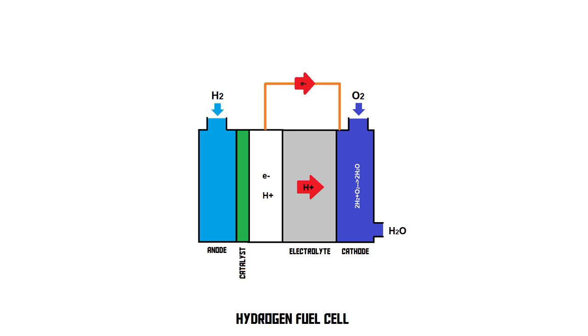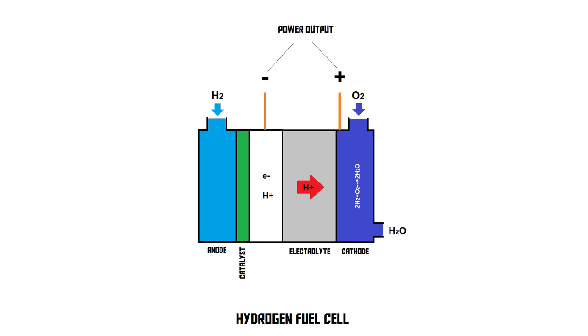And now what we've got is an electric current running through a wire, which we can then use to power a light bulb, a motor, whatever. This is the power output of the fuel cell.